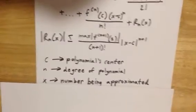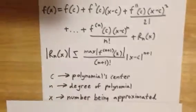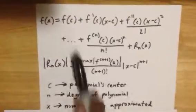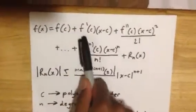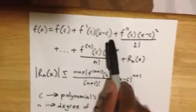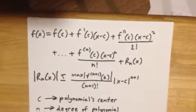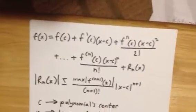x itself is the number being approximated. So if we were to, say, have f of 5, then we would be approximating 5. So we would have f of c plus f prime of c, 5 minus c, and so on. And that would be our approximation of f of 5.